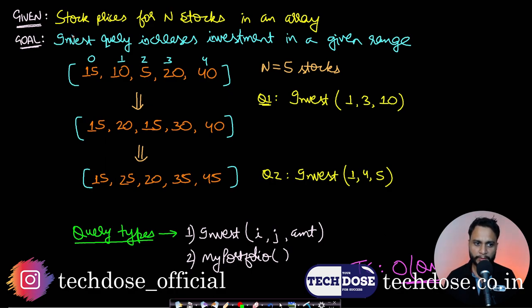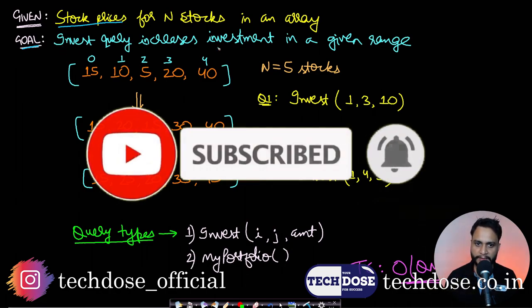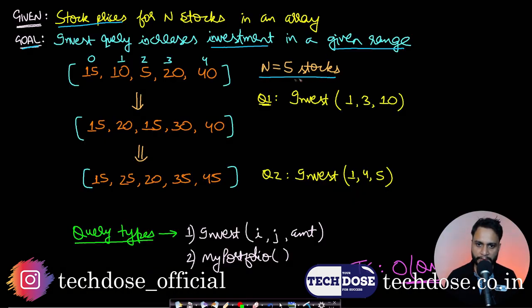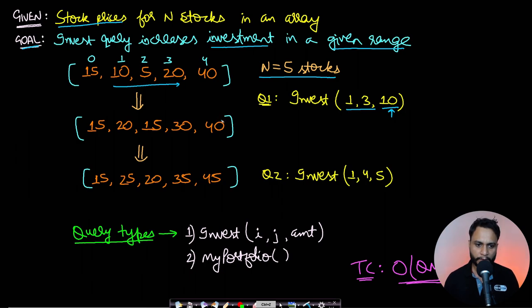In this problem we are given an array — I have assumed it represents stock prices of different stocks. The goal is there will be two types of queries. The first query is an invest query, which increases the investment in a given range. There are n stocks, say five stocks from index 0 to 4, and the initial investment is given as a portfolio. If we want to invest from stock index 1 to 3 with 10 units, we iterate over indices 1 to 3 and add 10.